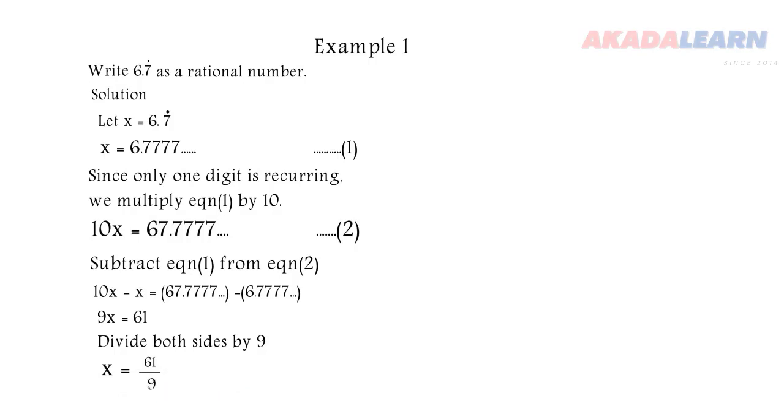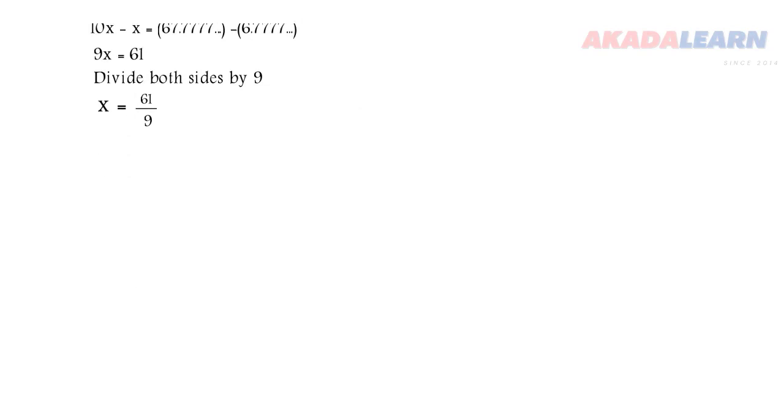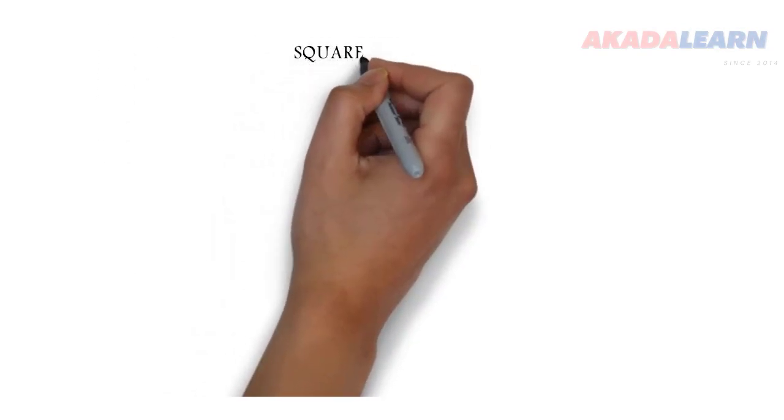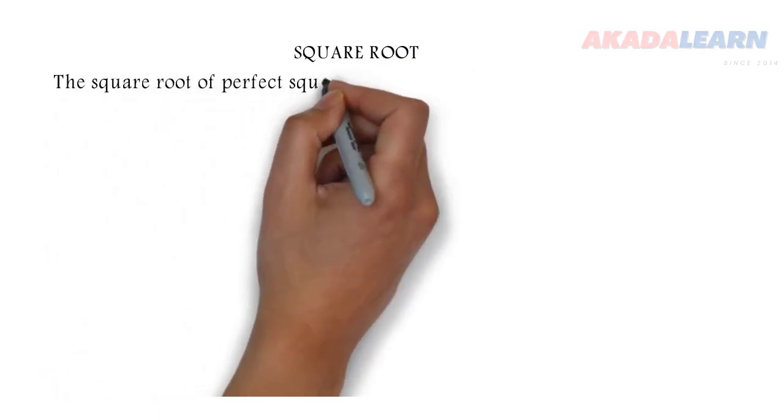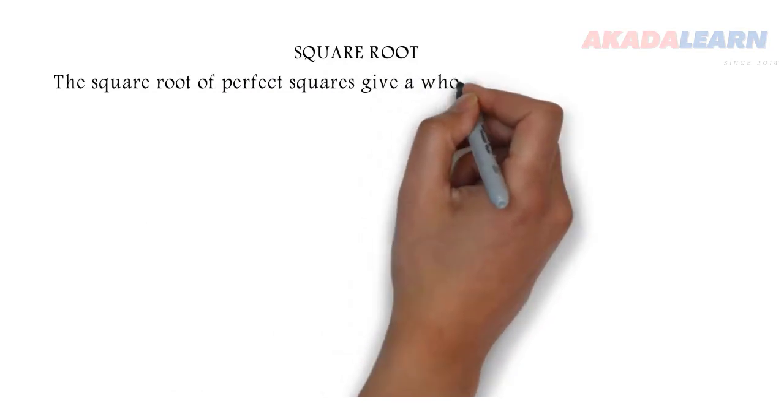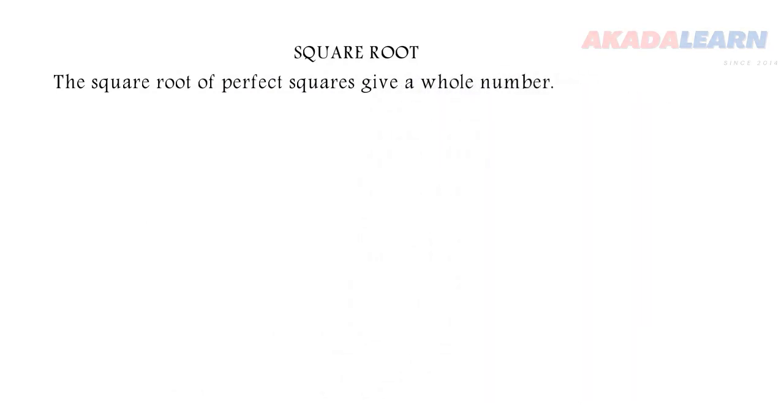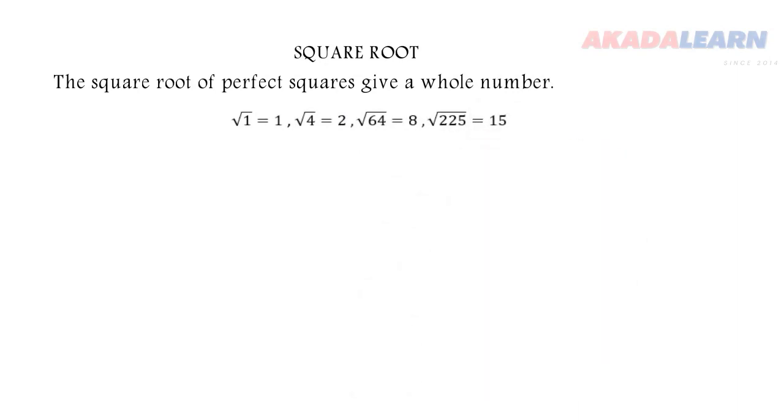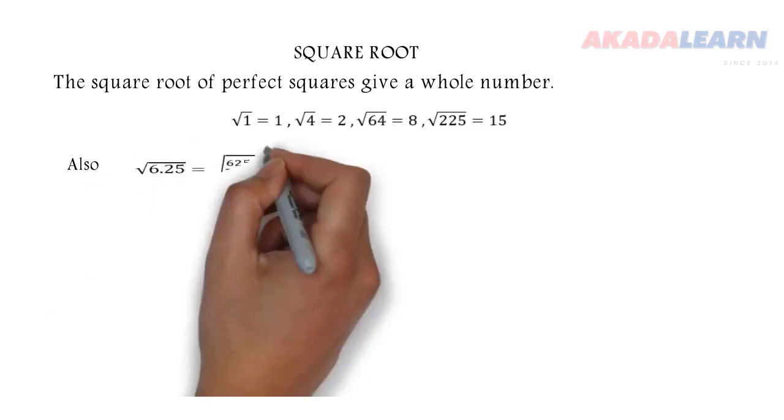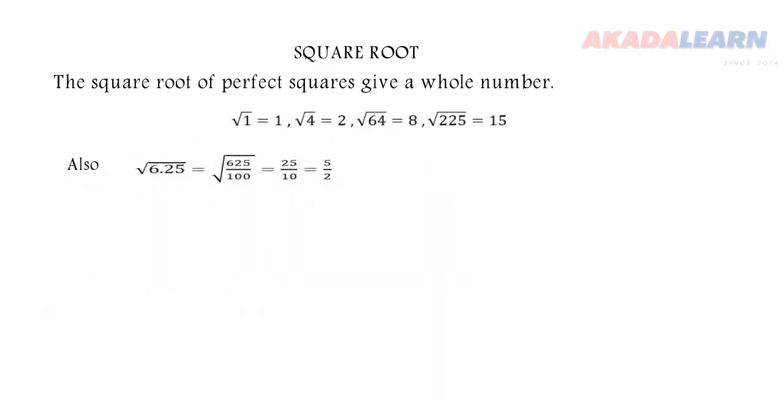Now let's proceed to square root of a number. Now the square root of perfect squares will always give us a whole number. So when we pick each of the whole numbers and we multiply them by themselves, we get what are called perfect squares. Those are examples of some perfect squares. Square root of 6.25 can also be simplified to 5 over 2.